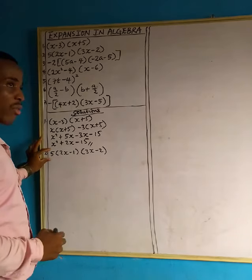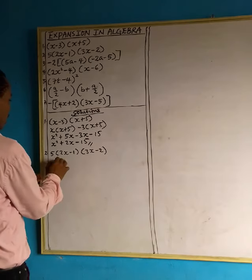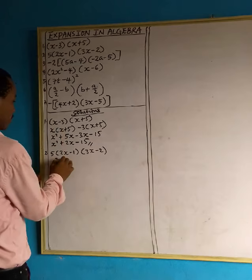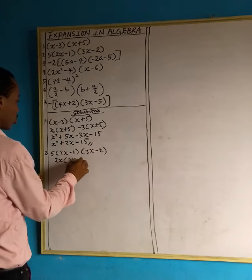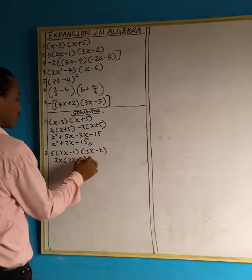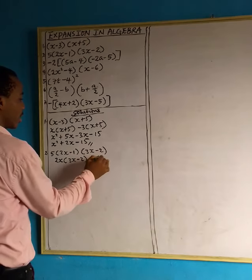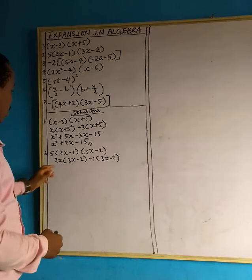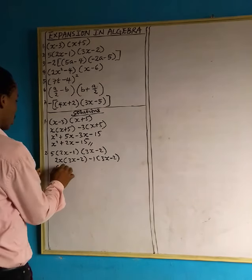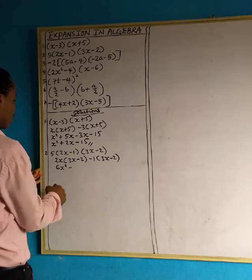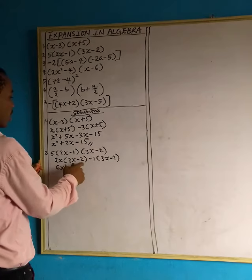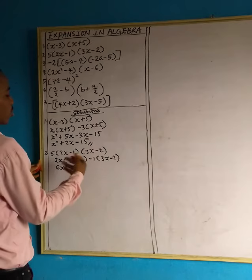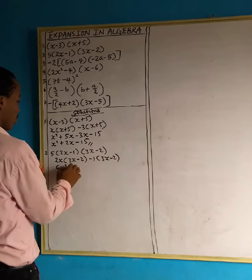Let's leave the 5 for now. Take 2x first, then multiply by everything in bracket 3x minus 2, like what we did in the first question. Then take minus 1 and multiply by everything in bracket 3x minus 2. So 2x multiplied by 3x gives us 6x squared. Minus 2x multiplied by 2 gives us minus 4x.